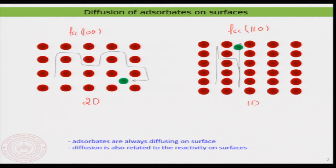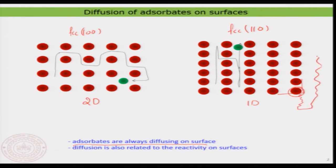Of course the final destination is a random position compared to the original one. But on FCC 110 there is a preference in the way the atom is diffusing on the surface. In any case, the point is that any adsorbate — whether it is an atom, small molecule, or big molecule — is always diffusing on the surface. And you will also see the same scenario at a step edge, where atoms at step edges would also start to go on a random walk around the surface.